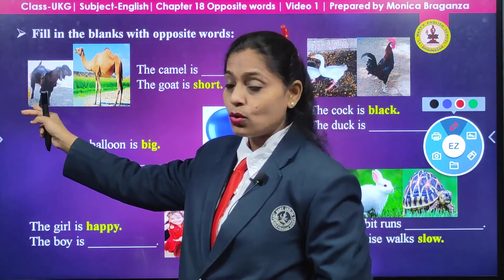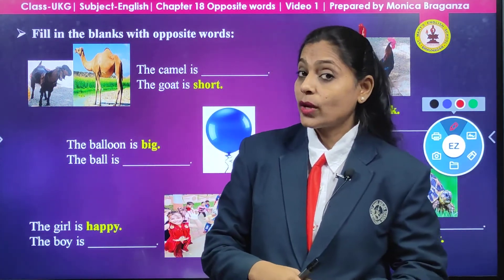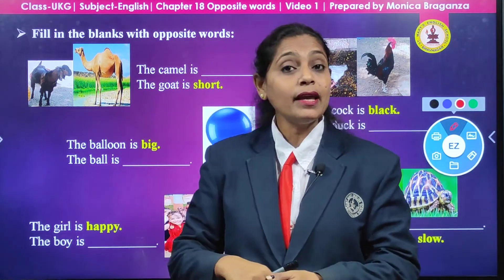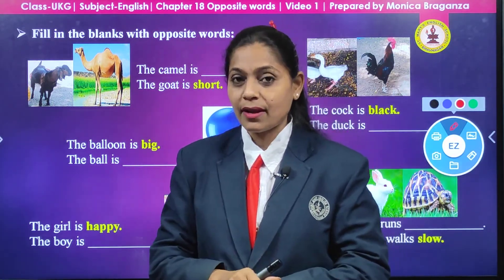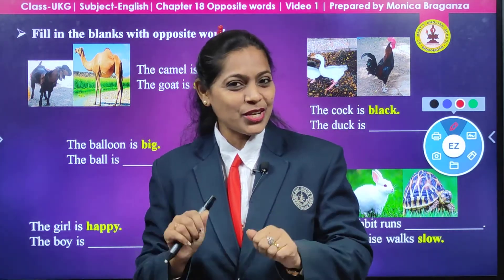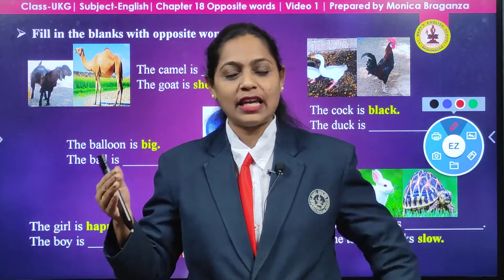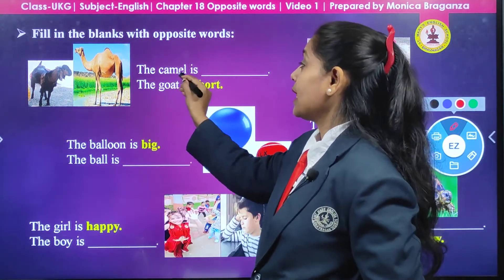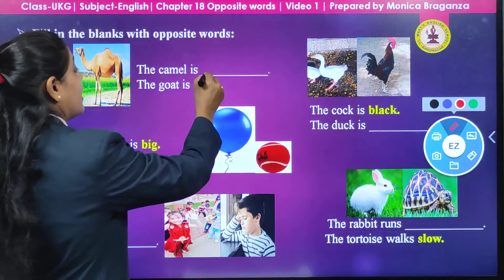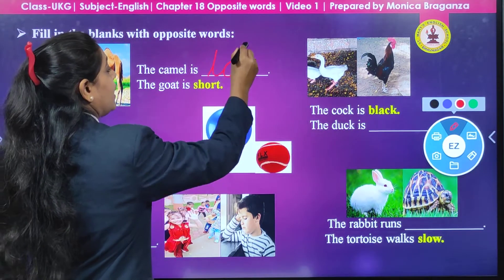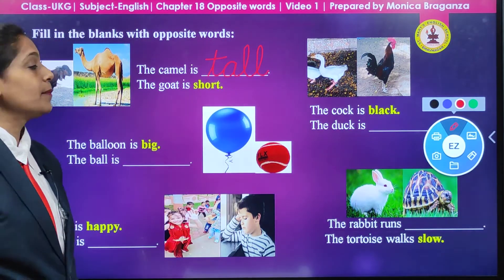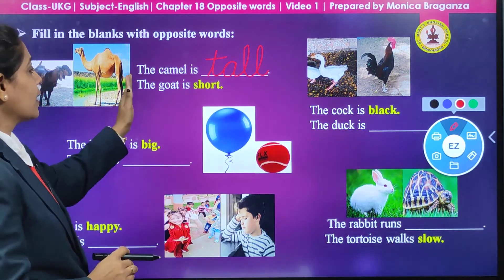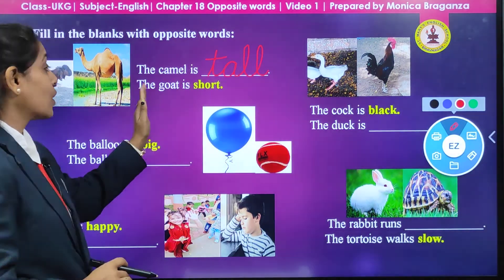Here we are having a picture of a goat and a camel. You can see the camel is taller than the goat — the goat is short, so the camel will be tall. Like your daddy is tall but when you stand in front of your daddy you will be short. So the camel is tall — we are going to write T-A-double-L, tall. The camel is tall; the goat is short.